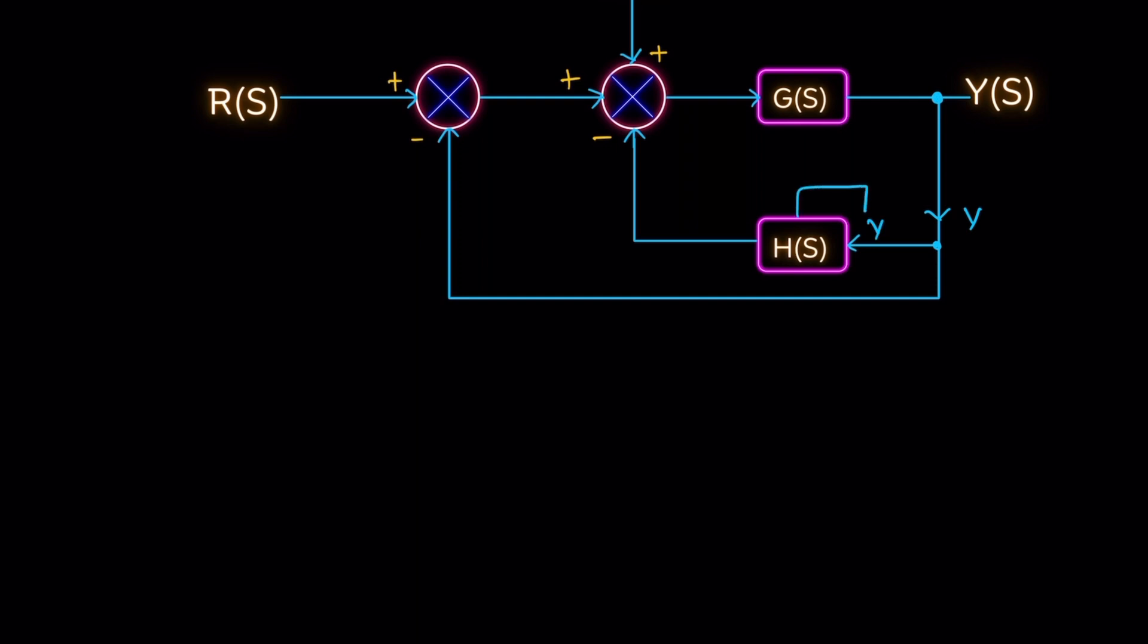After multiplying Y and H, this position is H into Y. Here there is no block, so this position is Y. From the first summing point, the output equals R as input, that is positive, so R, and here it's a negative sign, so minus Y.